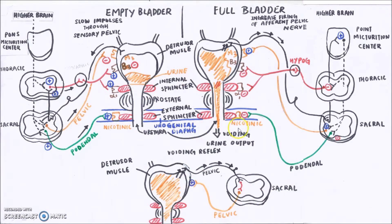Now let's look at the diagram on the right side, which shows the full bladder. The stretch receptors send increasing firing signals via the efferent pelvic nerve to the sacral region. This time it bypasses the thoracic lumbar region toward the micturition center, causing activation. The micturition center then sends nerve impulses to the thoracic lumbar region and inhibits the hypogastric nerve. When the hypogastric nerve is inhibited, the beta-3 receptors are not activated, causing contraction of the detrusor muscles. At the alpha-1 receptors, inhibition causes relaxation of the internal sphincters, helping us pass out urine — which is voiding.